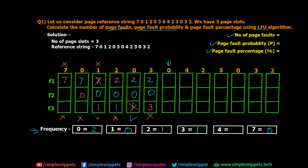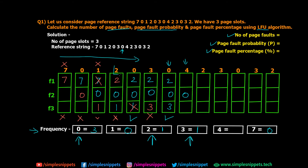Seventh step: page 0 is requested. Page 0 is already in memory — not a page fault. Pages remain: 2, 0, 3. Frequency of 0 is incremented from 2 to 3. Eighth step: page 4 is requested. Not in memory, so page fault. Compare frequencies of pages 2, 0, and 3. Page 0 has the highest frequency of 3, so we don't remove it. Pages 2 and 3 both have frequency 1. Applying FIFO, page 2 came in before page 3, so we remove page 2 and load page 4. Frequency of 2 is reset; frequency of 4 is incremented to 1.